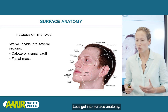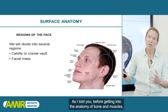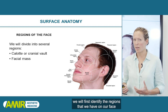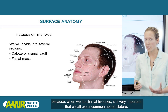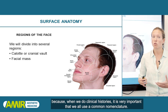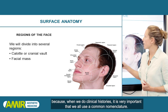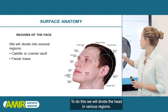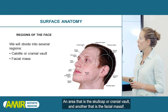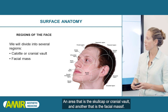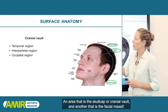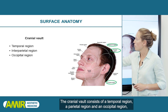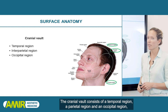Let's get into surface anatomy. Before getting into the anatomy of bone and muscles, we will first identify the regions that we have on our face, because when we do clinical histories, it's very important that we all use a common nomenclature. To do this, we will divide the head into various regions: an area that is the skullcap or cranial vault, and another that is the facial massive. The cranial vault consists of a temporal region, a parietal region, and an occipital region.